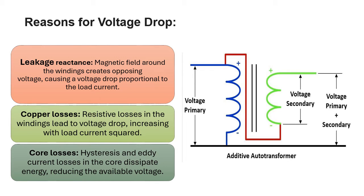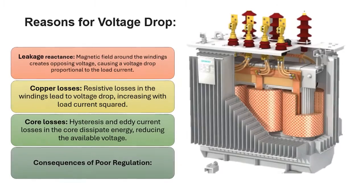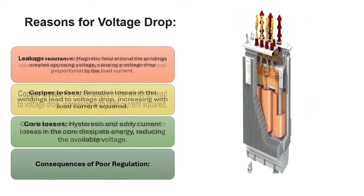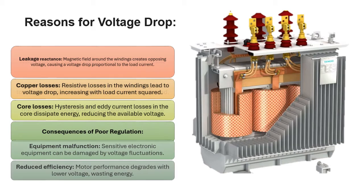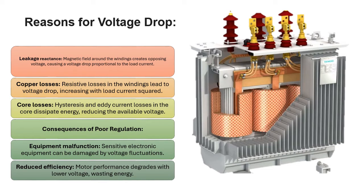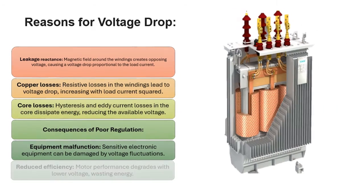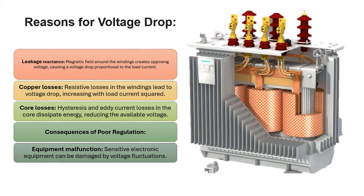Consequences of poor regulation: Equipment malfunction - sensitive electronic equipment can be damaged by voltage fluctuations. Reduced efficiency - motor performance degrades with lower voltage, wasting energy. Flickering lights - noticeable brightness variations with changing load.